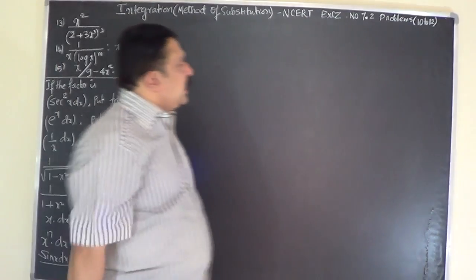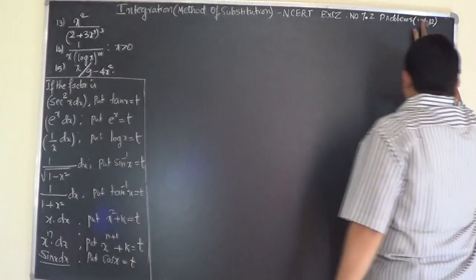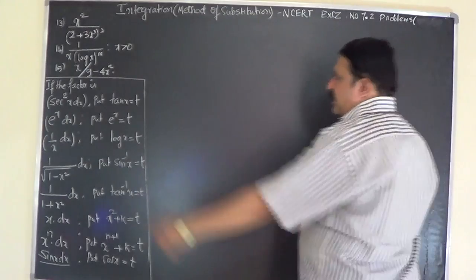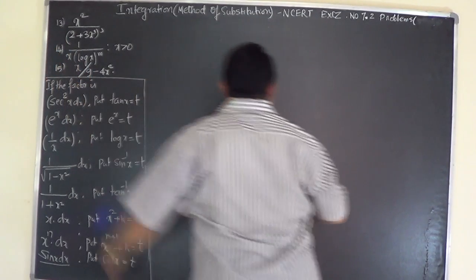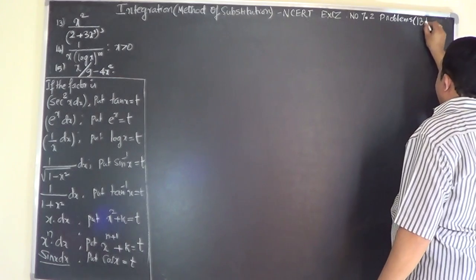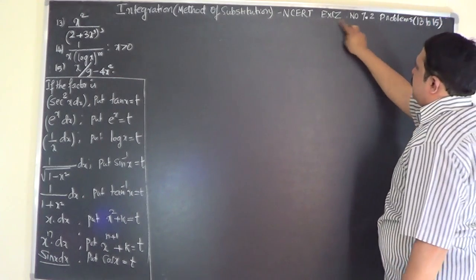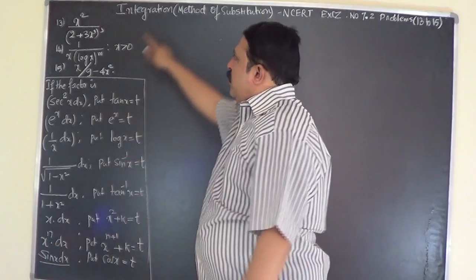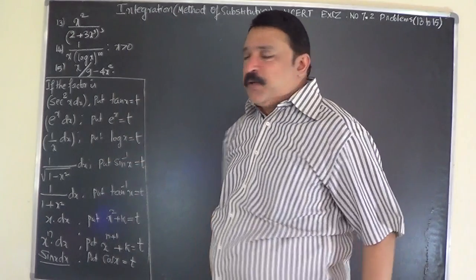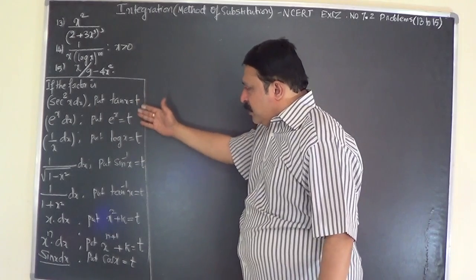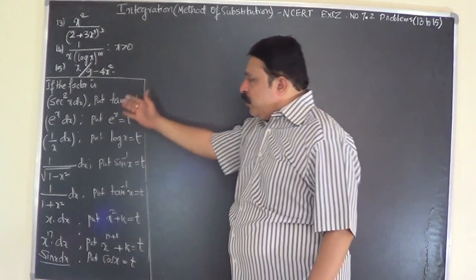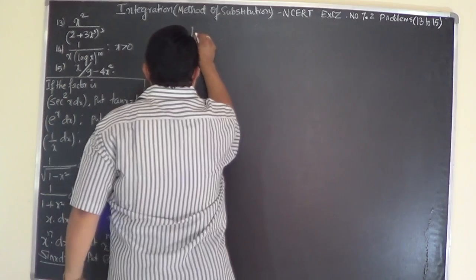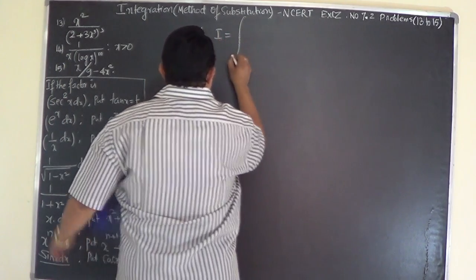We will now take up problems 13, 14, and 15 of Exercise 7.2 of the NCERT book, Class 12, on the topic of integration by the method of substitution. I have written the problems here. By this time, I'm sure you know all these substitution factors. So let's begin. Let I be equal to the integral of...